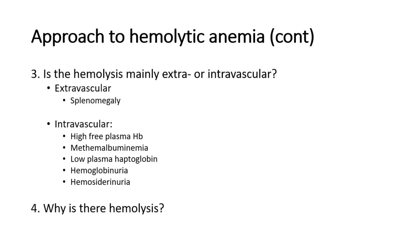The features of intravascular hemolysis are an increase in free plasma hemoglobin released from the red blood cells, methemalbuminemia, reduced plasma haptoglobin, hemoglobinuria where there is red-brownish urine, or hemosiderinuria.